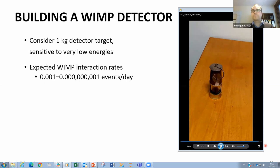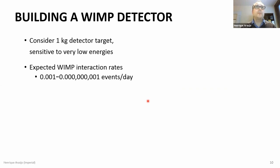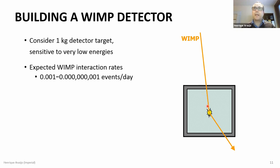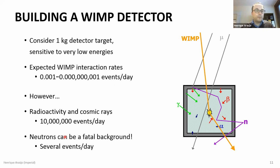To attenuate the cosmic ray flux sufficiently you need to go about one to two kilometers underground, which reduces it by a factor of about 10 million. That gets you from 10 counts per second down to a few counts per day in the large detector. Additionally, neutrons are a fatal background because they are long-lived, neutral, and have roughly the right energies to collide with nuclei inside your target, producing a nuclear recoil indistinguishable from a WIMP. We cannot have any neutrons, so we must be very careful.